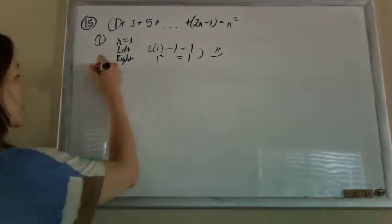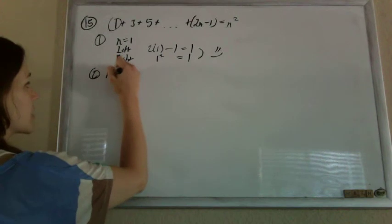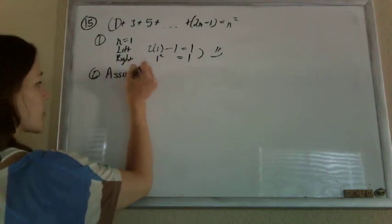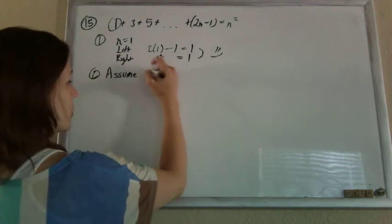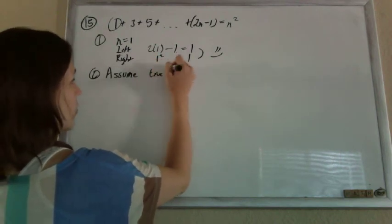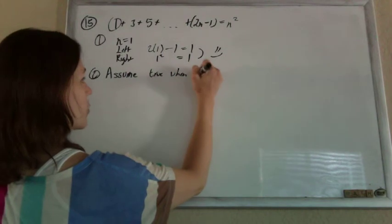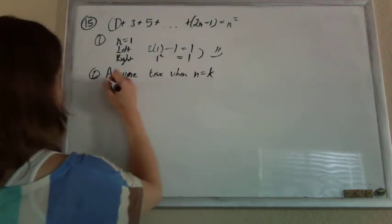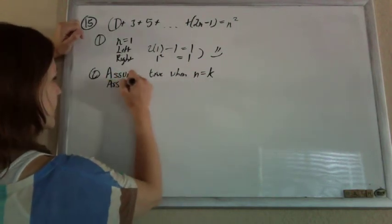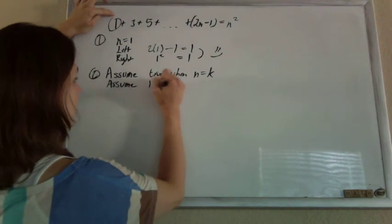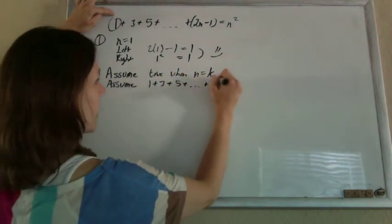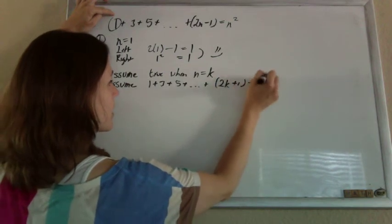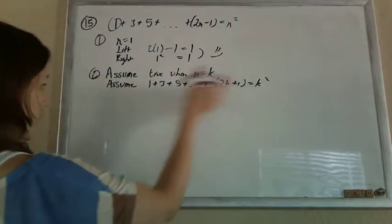Now we're going to make our induction hypothesis. We know it works for the first number. We're going to assume it works for another number. So assume the statement is true when n equals some integer k. This is another easy step, just rewrite the original formula with k's instead of n's. So I'm going to assume it's true for some k.